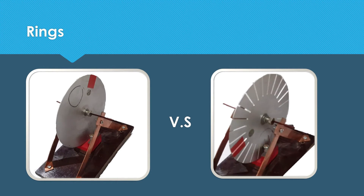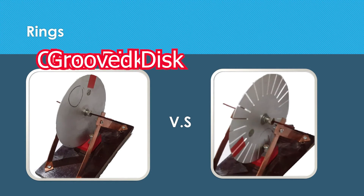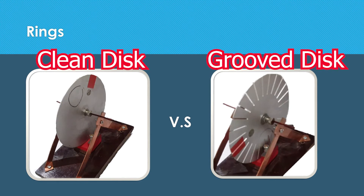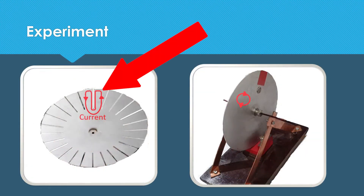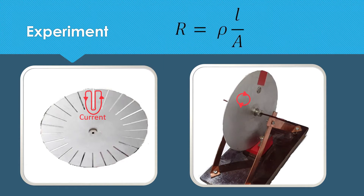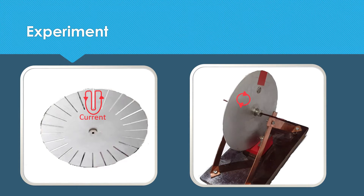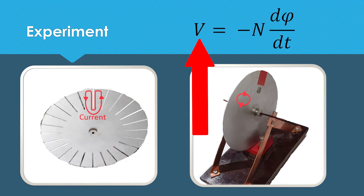We have two discs: one clean and simple, and another with grooves. The current has to take a longer path to be closed in the grooved disc rather than the clean disc. The resistance has a direct relation with the length of the path of the current loop. The magnetic source is the same, so the induced voltage for the two discs is the same.